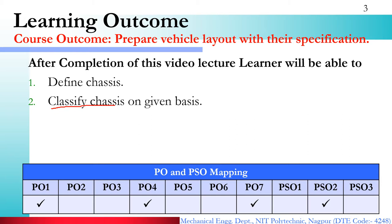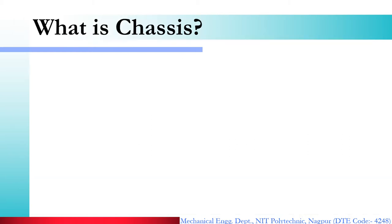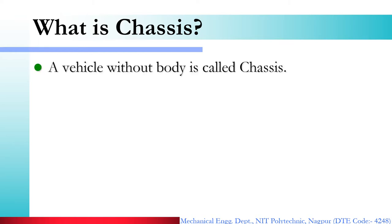Let's start the lecture and see what chassis is. In one line, if we define chassis: a vehicle without a body is called chassis. That is, if you remove the body from your vehicle, what remains is the chassis. For example, a chassis has all your components — transmission system, brakes, steering for control, and a place for the driver to sit. But apart from that, there is nothing else, because the body's job is to provide space for passengers or for cargo goods transportation. So when there is no body, that initial phase of the vehicle is called chassis.